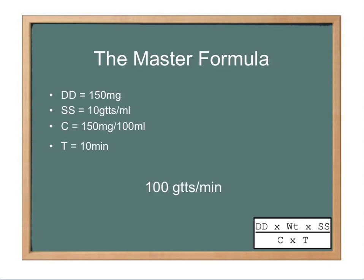If you're ever administering 150 milligrams of amiodarone in a bag of D5W over 10 minutes using a 10 drop set, your answer will always be 100 drops per minute because it is not a weight-based dose, so it's not going to change depending on the patient.